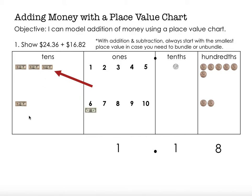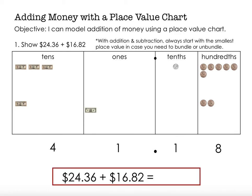And then lastly, I look at my tens place. Originally I had two tens and one ten, but because I bundled up ten of my ones, I have one, two, three, four tens. So when I add $24.36 and $16.82, I get $41.18. Our objective said I can model addition of money using a place value chart. We could see the bundling action — the regrouping when we have ten or more, how we exchange those and carry them to the next higher place value, exchanging ten tenths for one one and ten ones for one ten. Thanks for watching.